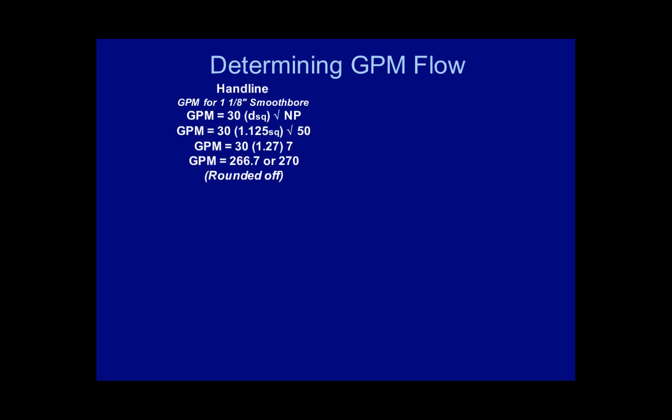Determining GPM Flow. Let's look at an example for a handline. To determine the GPM for an inch and an eighth smoothbore tip, we're going to use the formula GPM equals 30 times diameter squared times the square root of the nozzle pressure. GPM equals 30 times 1.125 squared times the square root of 50 for a handline, which equals 30 times 1.27 times 7, equaling 266.7, or rounded off to 270 GPM for an inch and an eighth smoothbore tip.